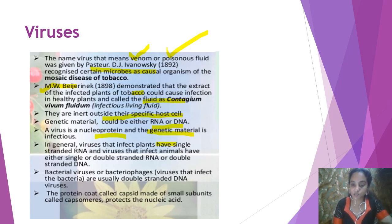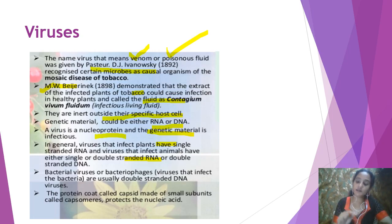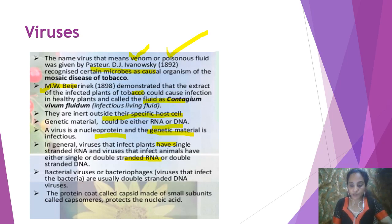Viruses that infect plants generally have a single-stranded RNA. Viruses that infect animals can have either single or double-stranded RNA, or double-stranded DNA. So in plants there is only one option — single-stranded RNA — but in animals it can be single or double-stranded RNA, or single or double-stranded DNA.